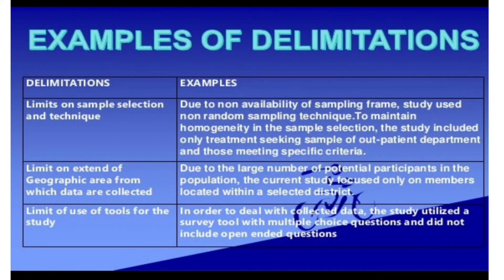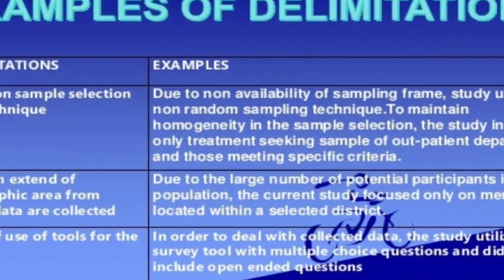Examples of delimitation: the study is delimited for a period of one month; the study is delimited to only diabetic patients attending a government general hospital in Chennai; or the study is delimited to only those who are willing to participate; or the study is delimited to patients taking only the pain supplement Ovirone or Paracetamol.